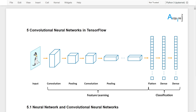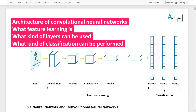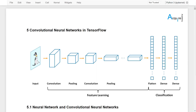I will explain the basic architecture of convolutional neural networks and how it works, what feature learning is, what kinds of layers can be used, what kinds of classifications or predictions we can perform. And once we have some background concepts, we will learn by doing.